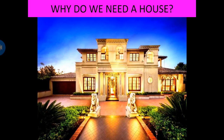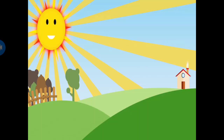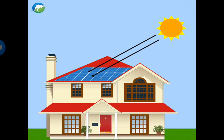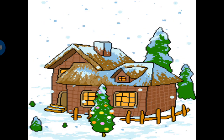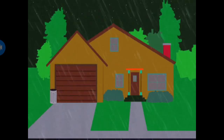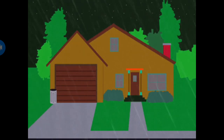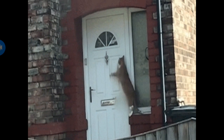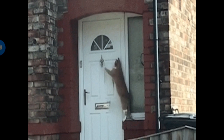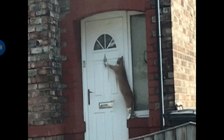Children, a house is a very important place. Why do we need a house? We need a house because a house protects us from sun and heat in summer, from cold in winter, and from rain in the rainy season. It also keeps us safe from stray animals and thieves.